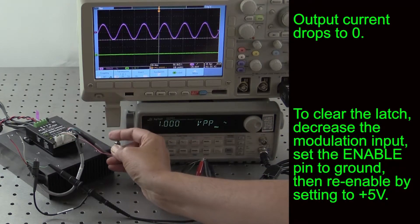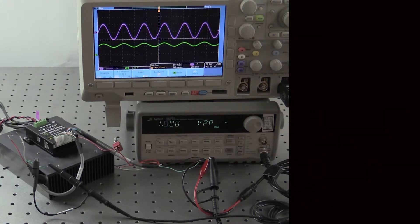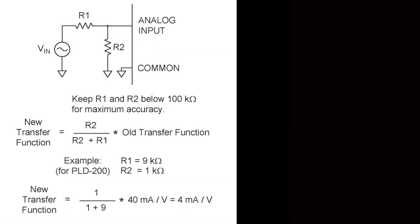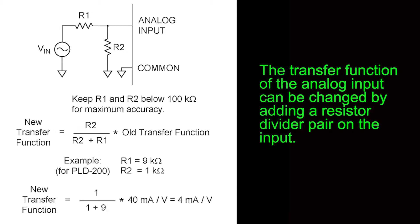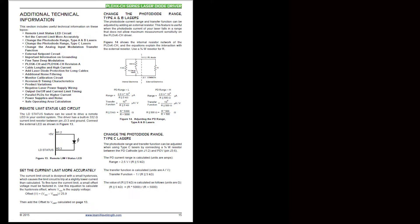If you won't be using the analog input, we recommend that you tie this pin to ground to minimize noise. The transfer function of the analog input can be changed by adding a resistor-divider pair on the input. For details on fine-tuning this and all other module parameters, consult the additional technical information section of the datasheet.